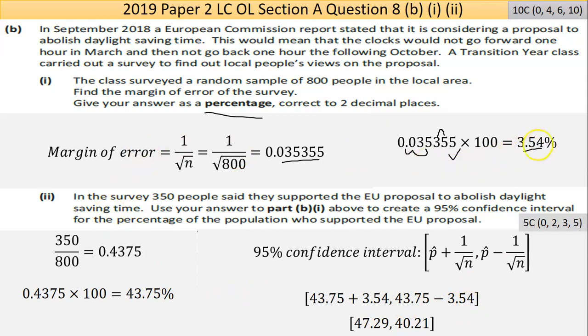Part 2: In the survey, 350 people said they supported the EU proposal to abolish daylight saving time. Use your answer to Part B1 to create a 95% confidence interval for the percentage of the population who supported the EU proposal. First, I'm dividing 350 by 800, which gives me 43.75% who supported.